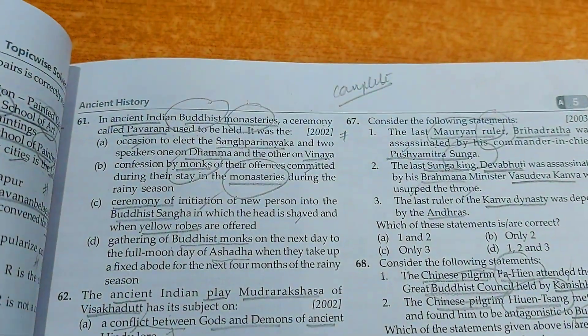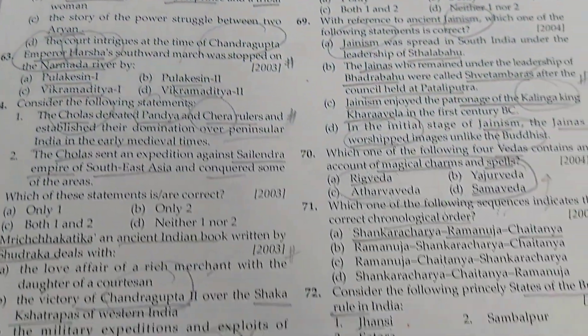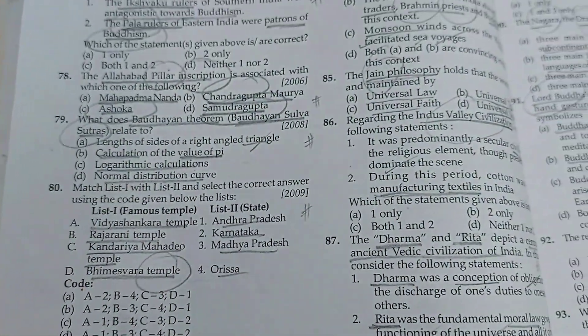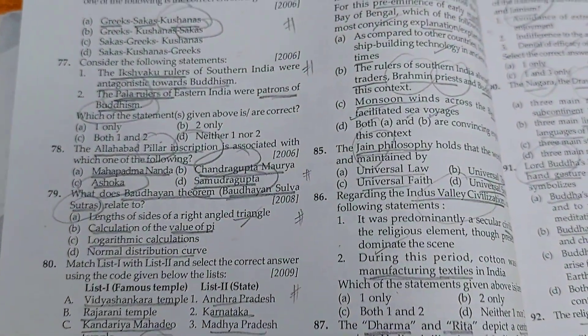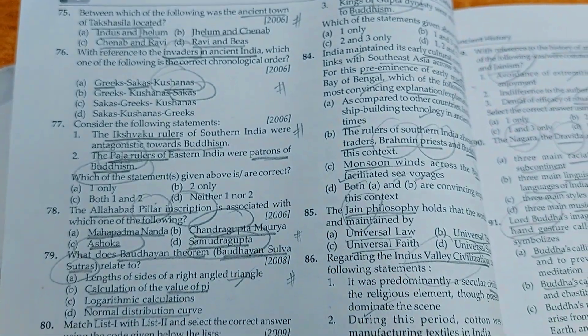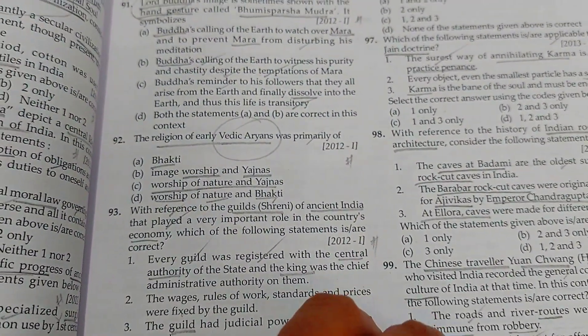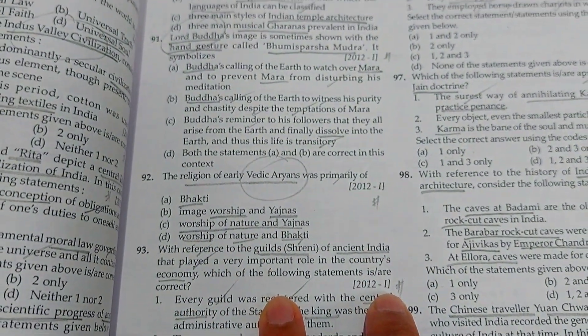Various monasteries related to Buddhism are very important. Focus only on these topics: Buddhism, Jainism, Indus Valley civilization, various dynasties like the Gupta dynasty — Gupta is also a favorite question. Also cover the Bhakti movement and Sufi traditions.